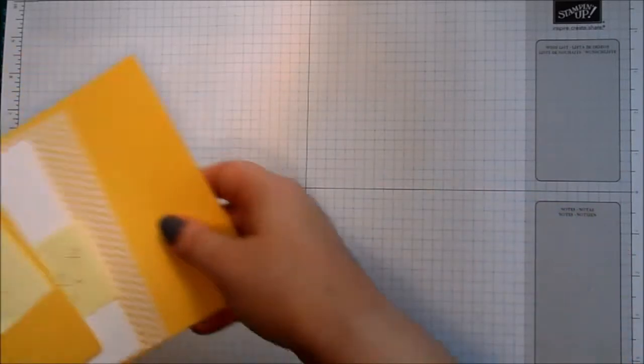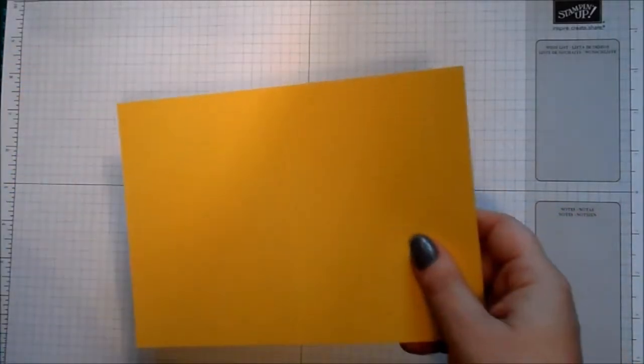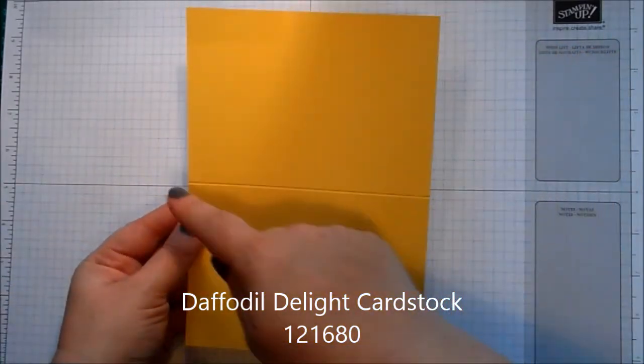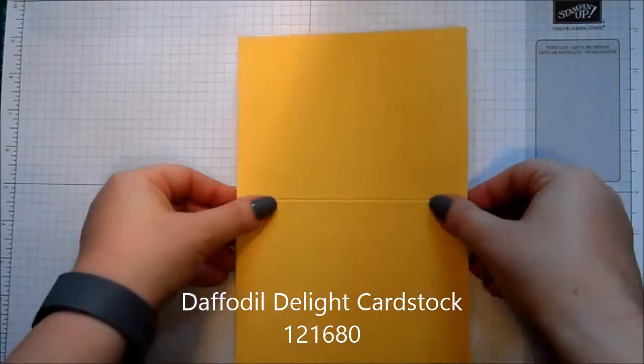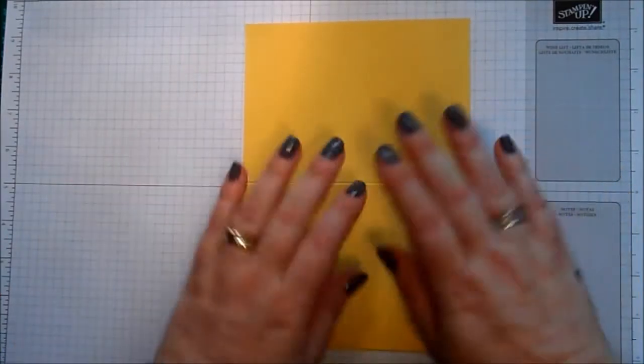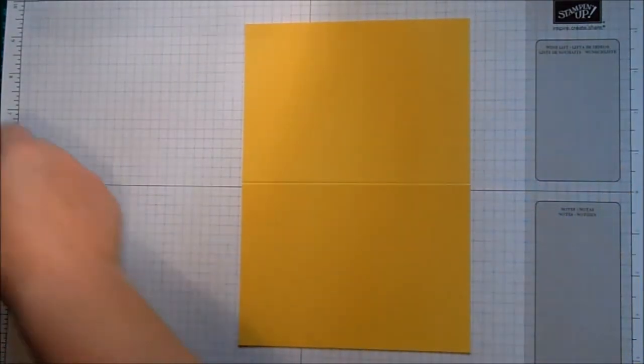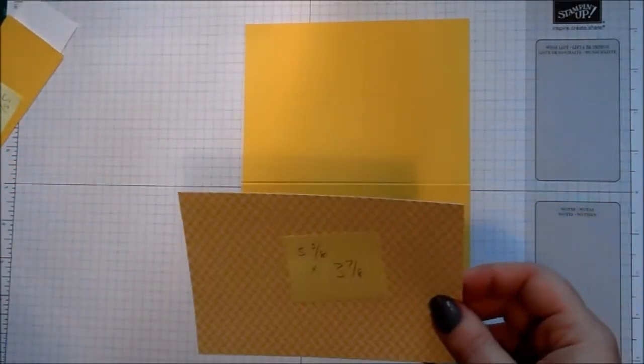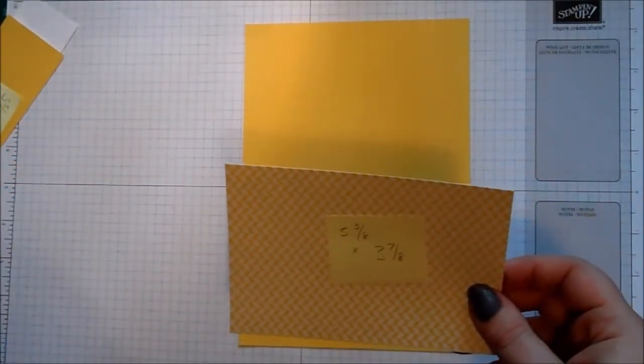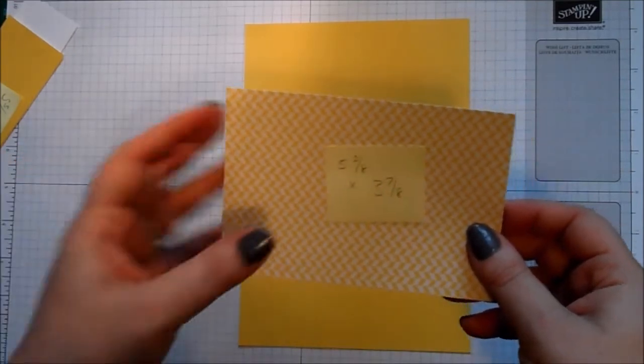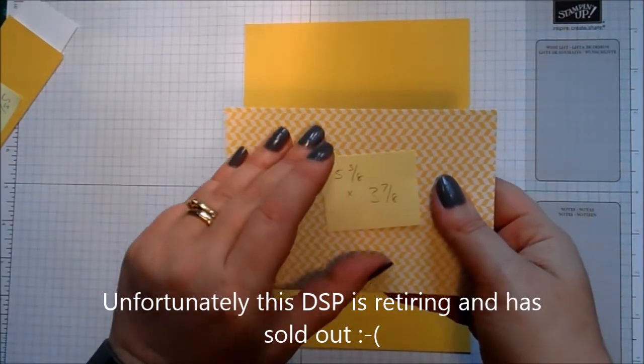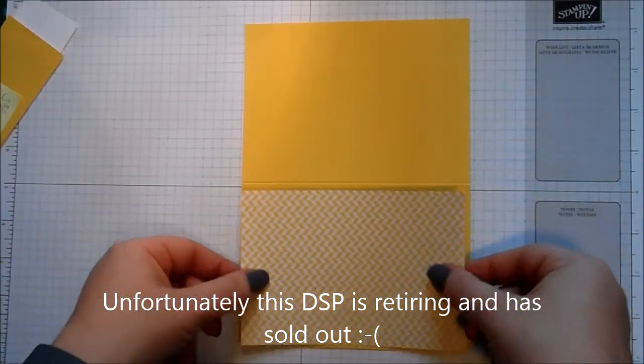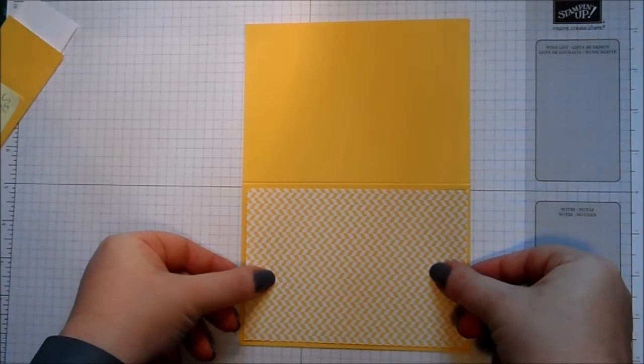I've scored this - I'll put the measurements on my blog for that. And then I've got a piece of DSP and this one has come from the Orla Bloom designer series paper stack. This is just whisper white and this is 5 5/8 by 3 7/8, and all we're going to do is stick that onto the base of the card.